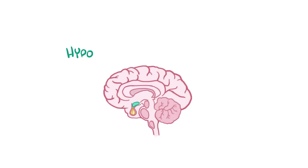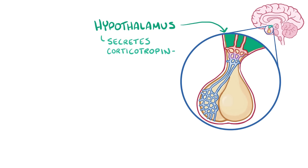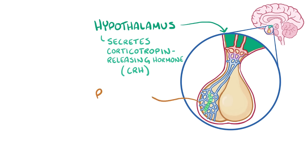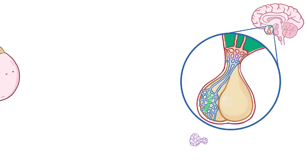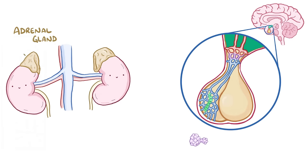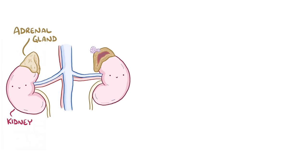Normally, the hypothalamus, which is located at the base of the brain, secretes corticotropin releasing hormone, known as CRH, which stimulates the pituitary gland to secrete adrenocorticotropic hormone, known as ACTH. ACTH then travels to the pair of adrenal glands on top of each kidney, where it specifically targets cells in the adrenal cortex.